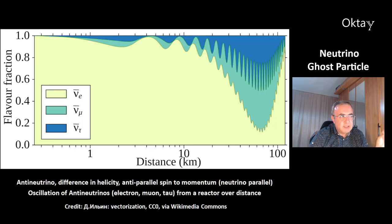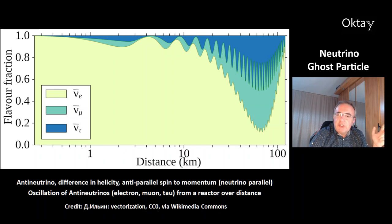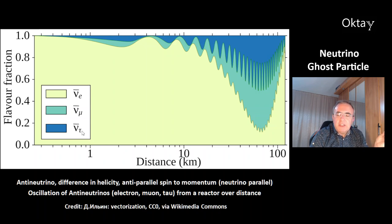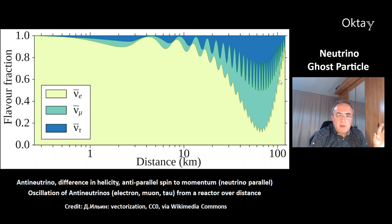This is a picture of an anti-neutrino. The difference between neutrinos and anti-neutrinos is the helicity. The anti-neutrino has an anti-parallel spin to the momentum, and the neutrino has a parallel spin to the momentum. In this picture, you can see nicely the oscillation of an anti-neutrino. In yellow, there's an electron anti-neutrino. In green, the muon anti-neutrino and the tau anti-neutrino — shown as fractions over a distance from a reactor. And you can see a nice mix of all three flavors.